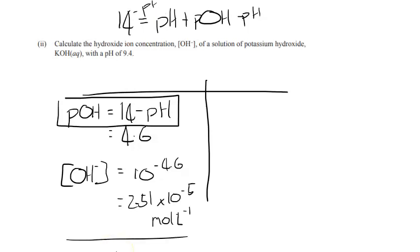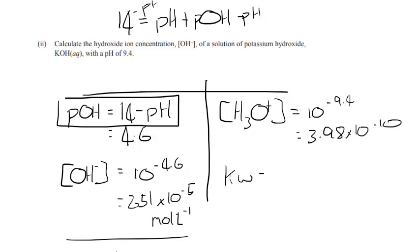The other way would be that we need to, first of all, calculate the concentration of hydronium ions. So we'd go hydronium ions is equal to 10 to the power of negative 9.4, and that equals 3.98 times 10 to the power of negative 10. And from there, we can then use the same equation that we used last time, with the KW equals the product of H3O+ and OH-.